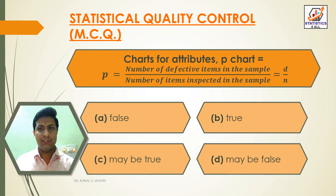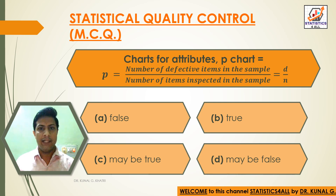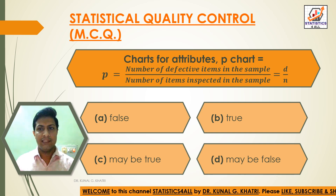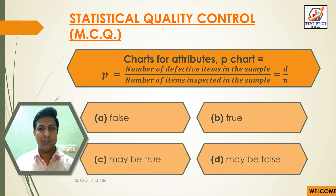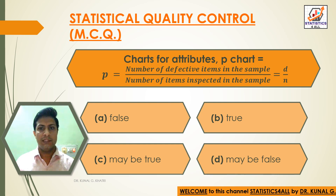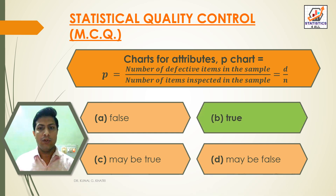Question 6: P chart — P is equal to number of defective items in the sample divided by number of items inspected in the sample, that is equal to D by N. Option A: False, Option B: True, Option C: Maybe true, Option D: Maybe false. Answer: Option B — True.